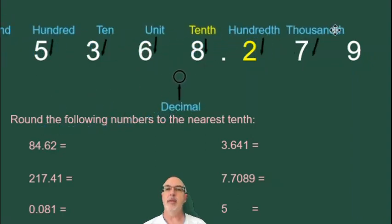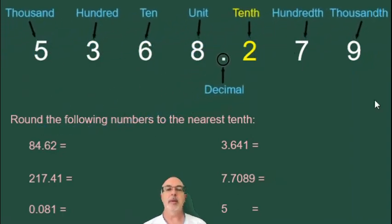The first thing we have to do is make sure we know where the tenth position is in the number. In this big number that I'm using as an example, the tenth is the first digit to the right of the decimal. For all numbers, when you want to find the tenth position, it's the first digit to the right of the decimal. So for all of these examples, that's the digit where we're focusing our attention.